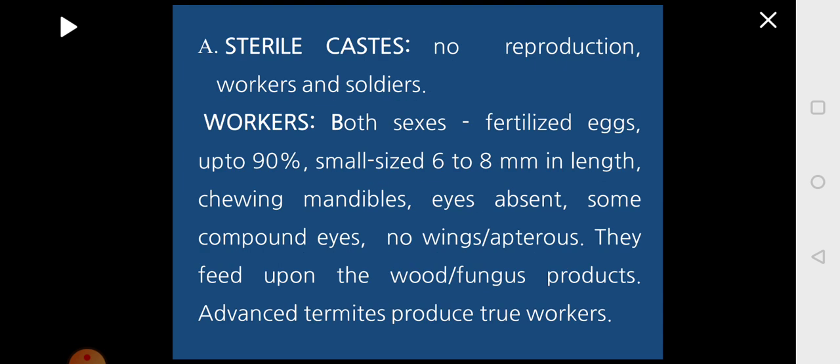The second major caste present in the termite colony is the sterile caste, which is not concerned with reproduction. There are two types: workers and soldiers. Here both males and females will be workers, unlike in honeybee where only females were workers. Workers are developed from fertilized eggs and up to 90 percent of the entire colony population are workers.